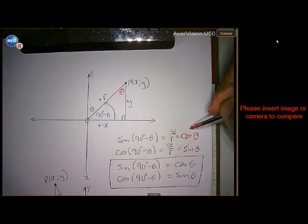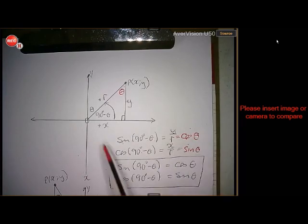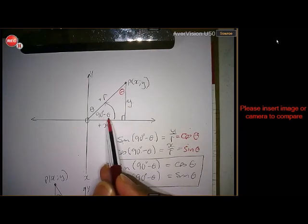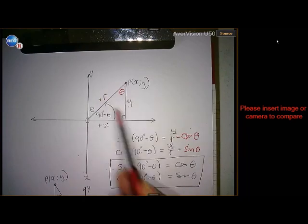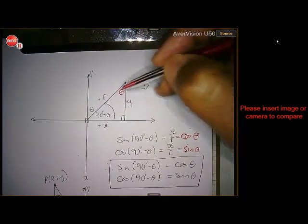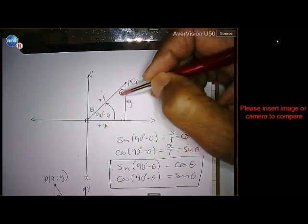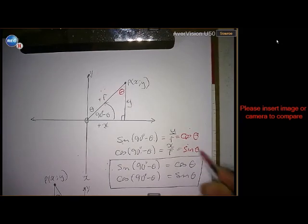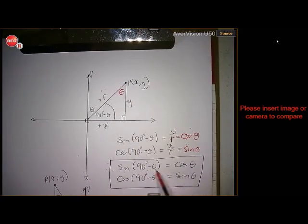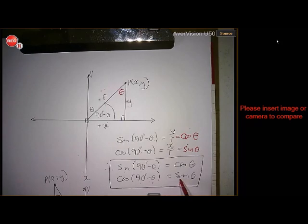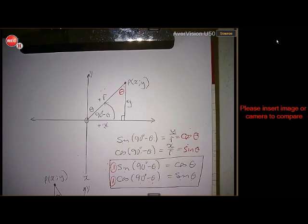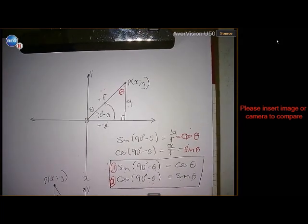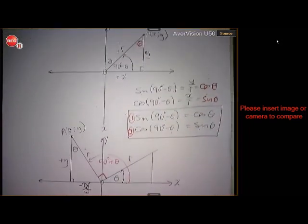So the cosine of 90 minus theta — cosine is adjacent over hypotenuse — is x over r. But from theta, x over r is opposite over hypotenuse, which is the sine of theta. Therefore, sin(90 - θ) = cos(θ), and cos(90 - θ) = sin(θ). Those are two very important identities — reduction formulas.